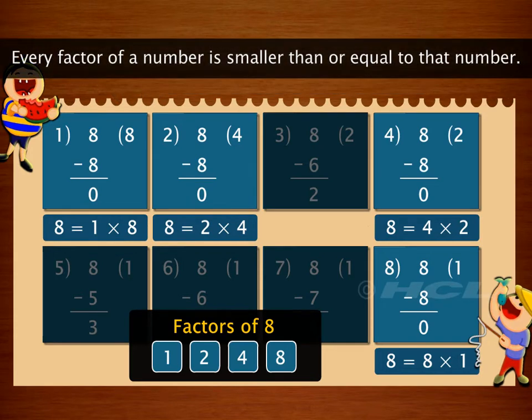Did you know that every factor of a number is smaller than or equal to that number? Here every factor of eight is either smaller than or equal to eight. Can you verify this for another number, say 48?